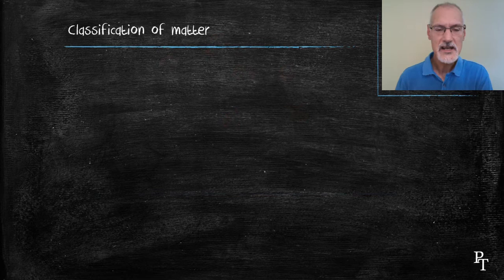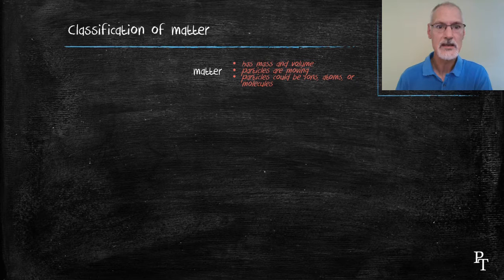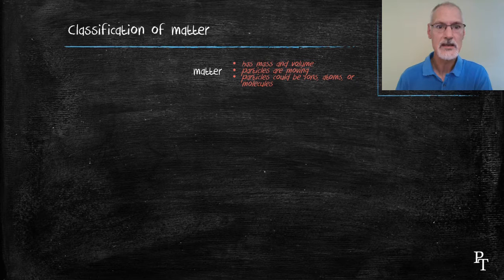First of all, what do we classify matter as? Matter is anything that has both mass and volume. Matter is composed of particles, and these particles are moving in a variety of ways. The particles can take on different natures. They could be individual atoms or groups of atoms that we call molecules. They could possess charges, in which case we call them ions.